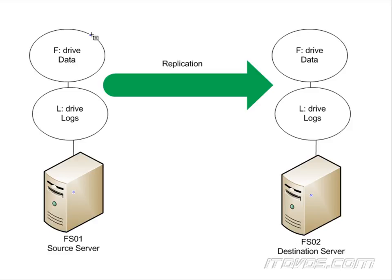As you can imagine, if I'm working on a file that's on the F drive and it has to be written to both drives before the computer responds, if I've got a slow network connection between these two servers, that's really going to slow down performance. So if we're using synchronous replication, we want to make sure we have a fast network between our source and our destination.